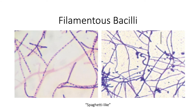Then we have our filamentous bacteria. These are bacilli that are arranged end-to-end, forming spaghetti-like arrangements. Some common examples are your brucella on the left and your gardnerella species on the right. It's very important to differentiate these from your fungi because they have similar morphologies, and to the untrained eye they look sort of the same.